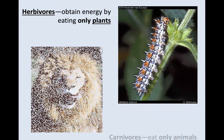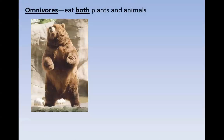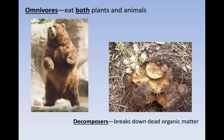There are different types of consumers depending on the foods they prefer to consume. Herbivores are organisms that obtain energy by eating plants. Carnivores are our meat eaters. Omnivores eat both plants and animals. Then we have decomposers, which are able to break down dead organic matter. There are different types of consumers you should be familiar with, and we'll see this when we look at our energy pyramid and how energy is transferred from one trophic level to the next.